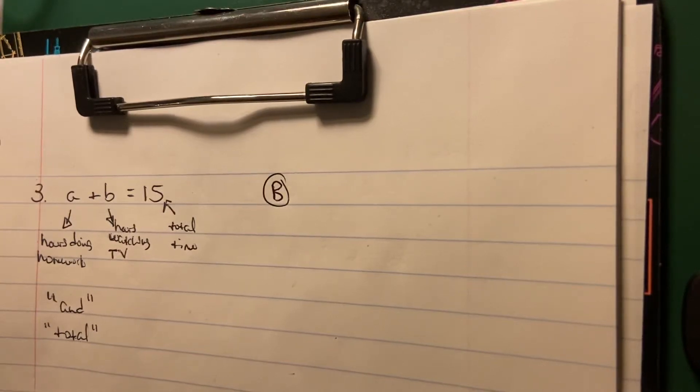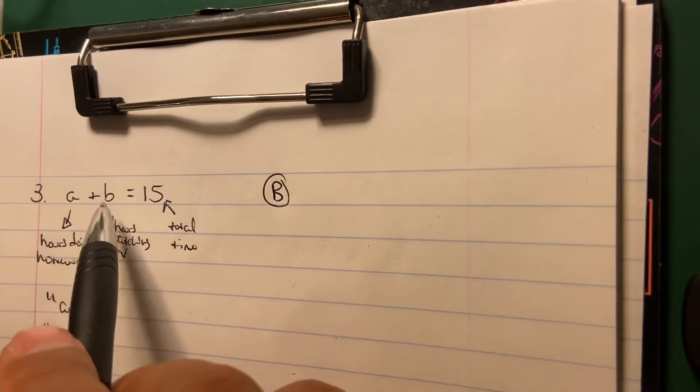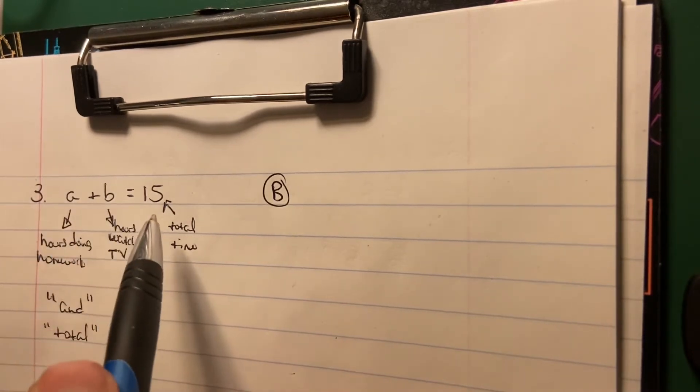So in this particular problem, we're looking at number three from the SAT prep. Now, it gives you the equation A plus B equals 15.